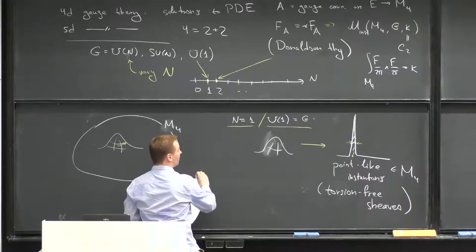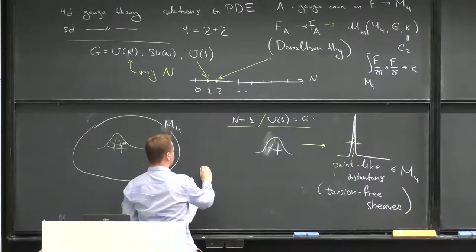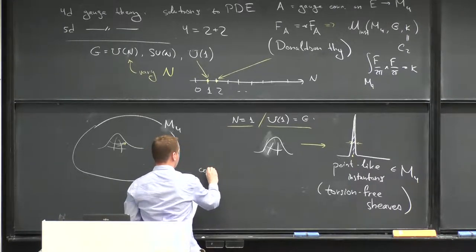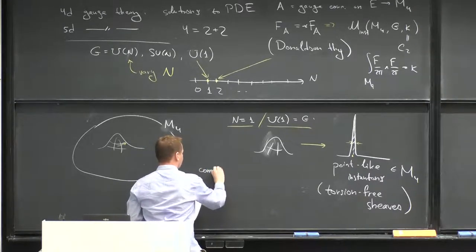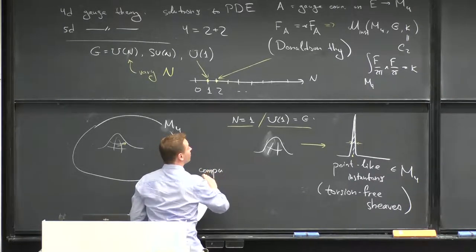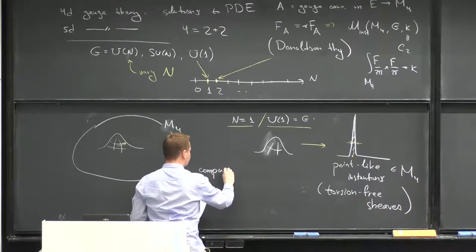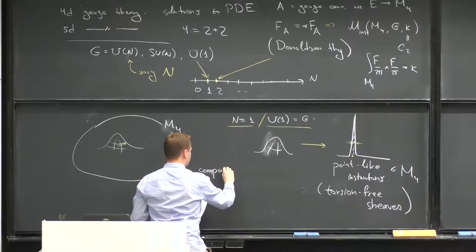This is a very singular object — it doesn't have size. The size is formally equal to 0, and it's localized at a point inside the 4-manifold M₄. If you use algebraic geometry and ask yourself whether you can make sense of the U(1) gauge group case, you arrive at this definition. The same conclusion you get if you study higher values of N and ask about compactification of the moduli space, which involves studying limits and including point-like configurations.